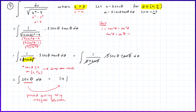We proved back in the trig integrals section that this is a useful integral worth committing to memory. The integral of sec(θ) dθ equals the natural log of |sec(θ) + tan(θ)| + C since this is an indefinite integral. So we've found our integral, but the problem is it's in terms of theta and we need it in terms of x.